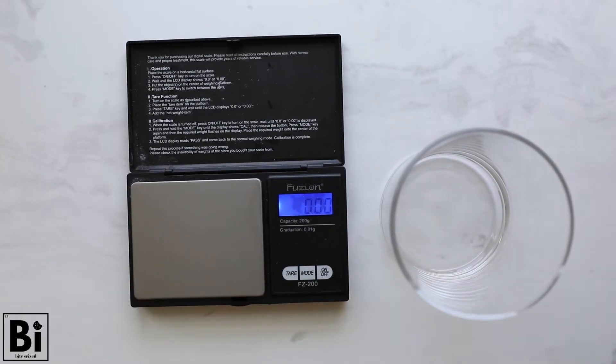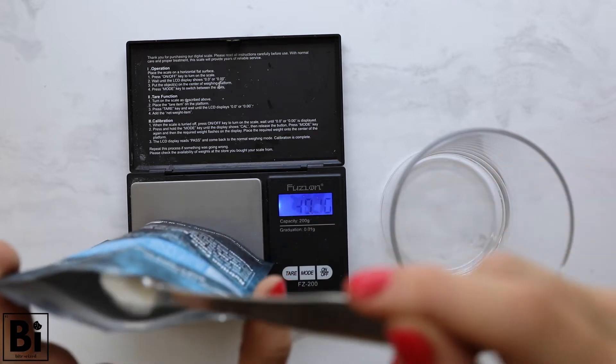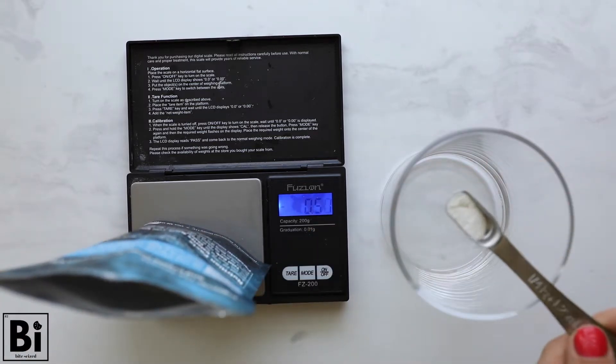It can be tricky getting exactly 0.5 grams because it's so small, so we actually found the easiest way to do this was put the bag on the scale, zero it, and then measure how much you're taking out.